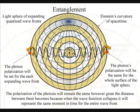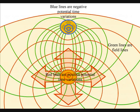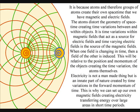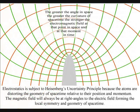In this theory it is because the atoms can distort the geometry of space and time that we have electromagnetic fields. It is time variations within magnetic fields that act as the source for electric fields, and time varying electric fields is a source of the magnetic fields.